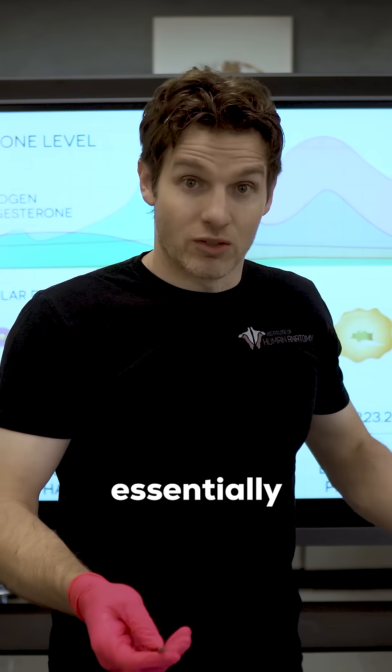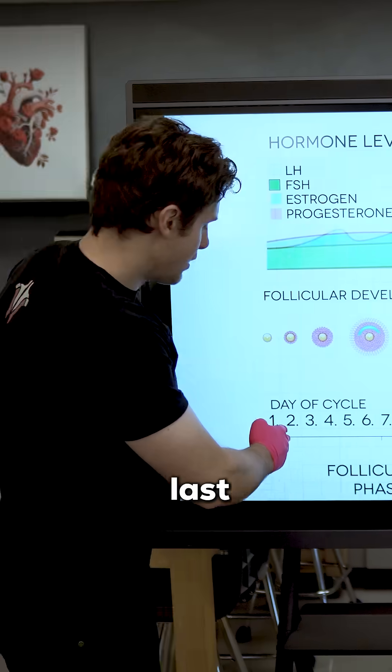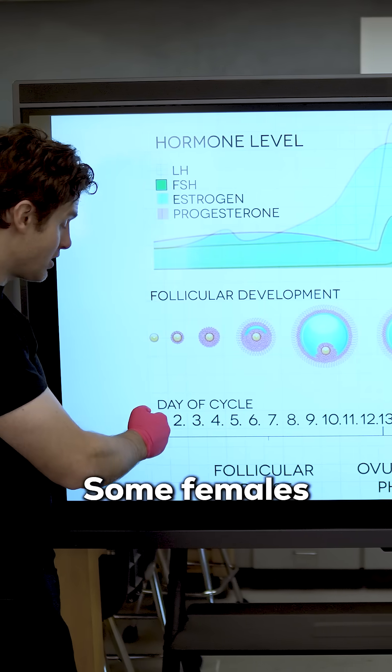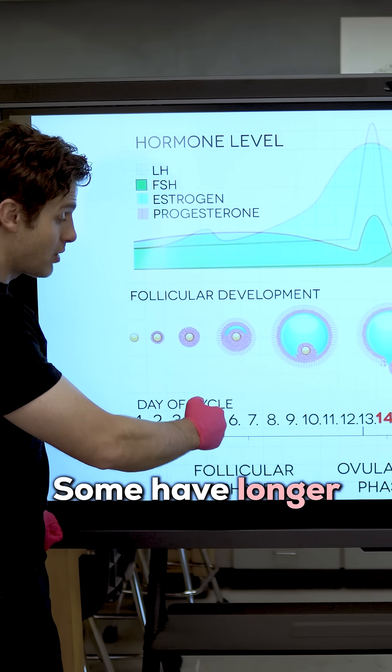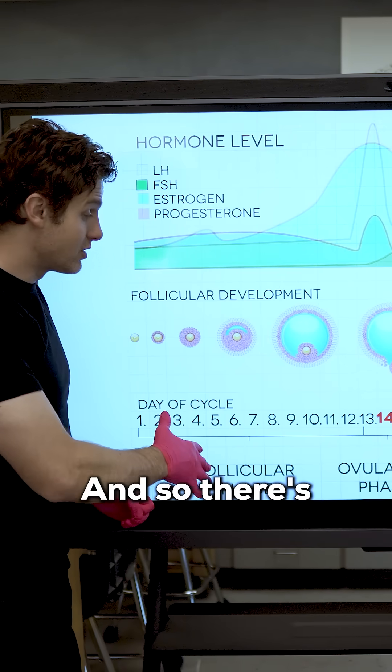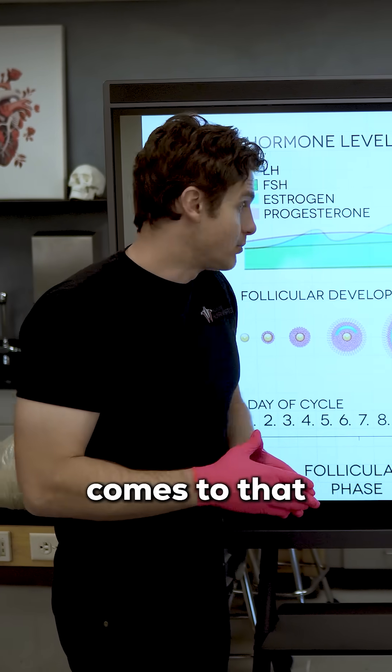And that's what's essentially responsible for the menstrual bleeding. This can last anywhere from one to seven days. Some females have it for a couple days, some have longer and heavier periods that can last up to seven days, and so there's a bit of variation.